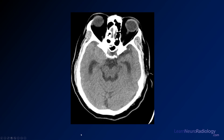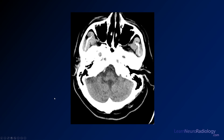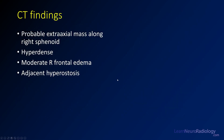We see there's probably a mass that looks almost like it's centered around the bone or an extra-axial space. On the bone window, is there a little bit of hyperostosis? Maybe — but this is really hard to see. We just see some mass effect and surrounding edema, so you're definitely going to need an MRI in this patient. We think there's probably an extra-axial mass along the right sphenoid — it does look a little dense, and there is right frontal edema. Our differential is really a meningioma, as it is by far the most common extra-axial tumor.